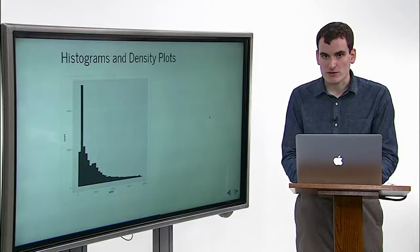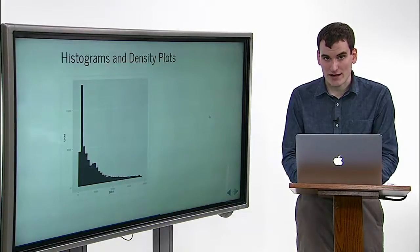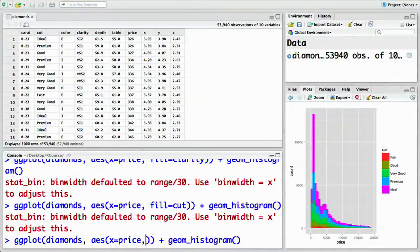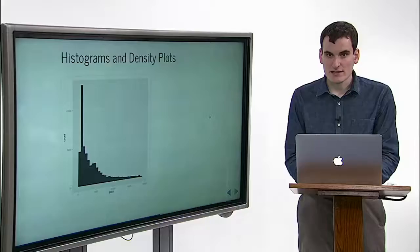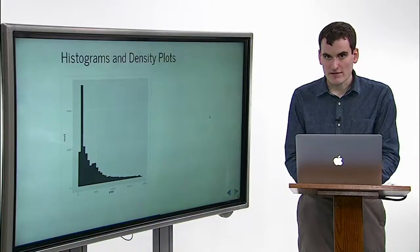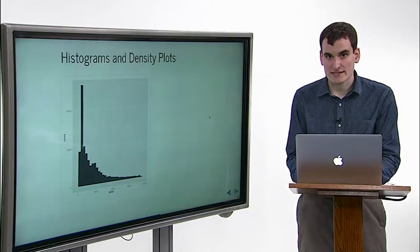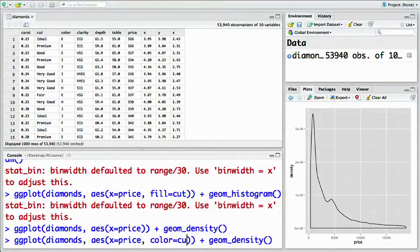Another way to view the distribution is with a density curve. You can do this by changing geom_histogram to geom_density. Notice that it looks smoother than a histogram. If you want to divide this density curve up based on one of your attributes, you can use the color aesthetic instead of fill. For example, adding color equals cut.